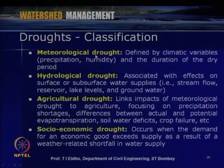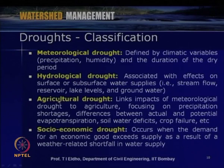With this background, let us look into the classification of droughts. We can classify droughts into four categories depending on their nature and after-effects. The four categories are: meteorological droughts, hydrological droughts, agricultural droughts, and socio-economic droughts.